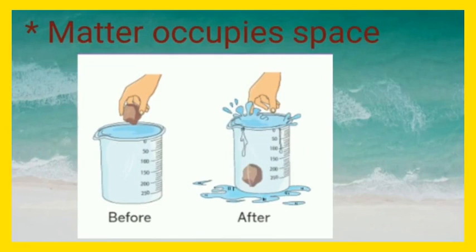Number 2 is, matter occupies space. To study that matter occupies space, we require material like a beaker, stone and water. First, we will fill the beaker with water up to the brim. Now, gently we will drop the stone into the beaker.